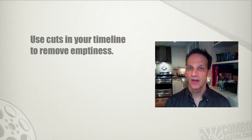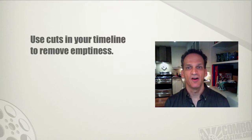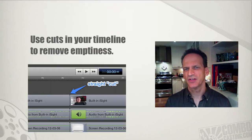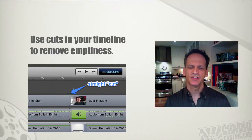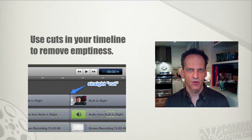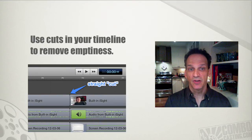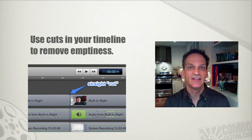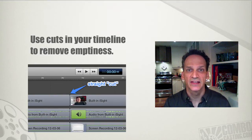Number one: get rid of dead air. Use quick cuts in your timeline to delete all dead air from your original recording. A cut actually has no transition effect — it just goes from one frame in your recording to another. This should be your default transition, if that's what you want to call it, because viewers hate to be tuned into nothingness.